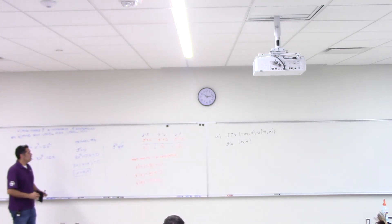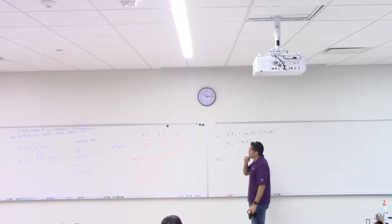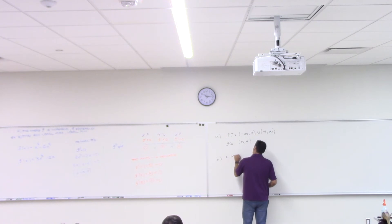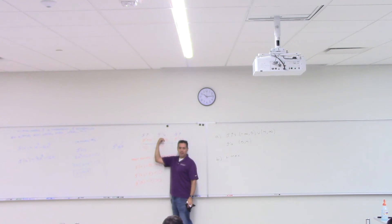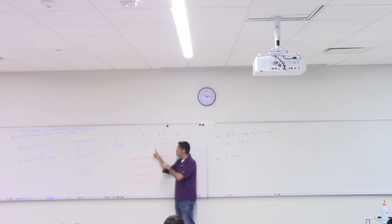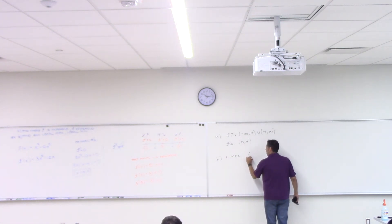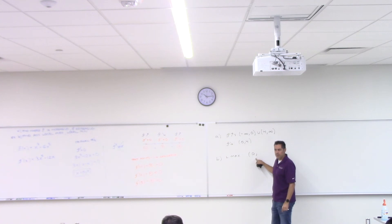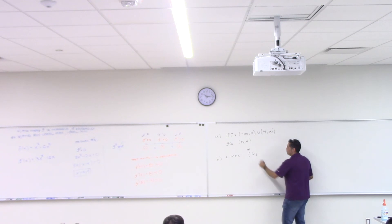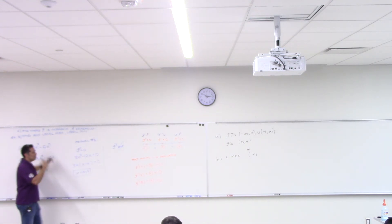Part B: find any local maximums or local minimums. Do we have a local maximum? Yes — at x = 0 the graph goes up and then goes down, so we have a local max, as long as 0 is in the domain of the original function — and it is, it's a polynomial. Plug 0 into the original function and you get 0. So (0, 0) is a local maximum.